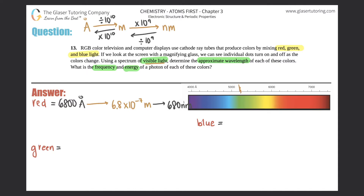Let's do the same for green. Green looks like it would be right here — a nice green color. The spectrum goes up by 200s: 5200, 5400, 5600, 5800, 6000. So we'll say green is 5200 angstroms, which equals 5.2 times 10 to the negative 7th meters, or 520 nanometers.